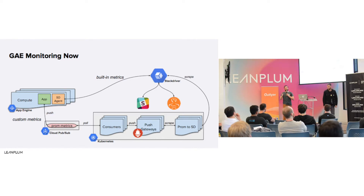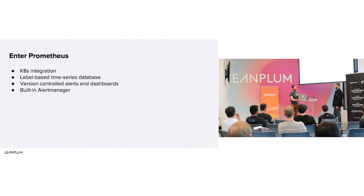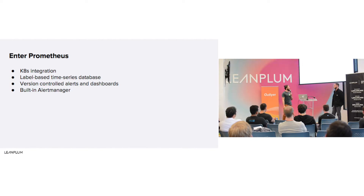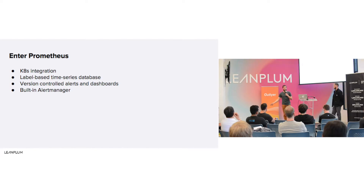We're trying to move away from the managed service environment with App Engine and Stackdriver, and we chose Prometheus as a stepping stone to replace all of that for several reasons. Primarily, it integrates really well with the whole Kubernetes ecosystem. Prometheus is a pull-based metric system and works really well with ephemeral pods in Kubernetes because Prometheus has very flexible service discovery. As your machines scale up and down, Prometheus just pulls new instances matching certain labels.